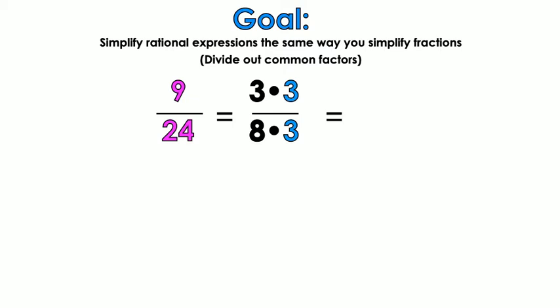You're canceling out the fact that there's a 3 on top and a 3 on the bottom, and that's how you get 3 over 8. So if you divided 9 by 3, you get 3. And if you divided 24 by 3, you would get 8. This is how you simplify a fraction.